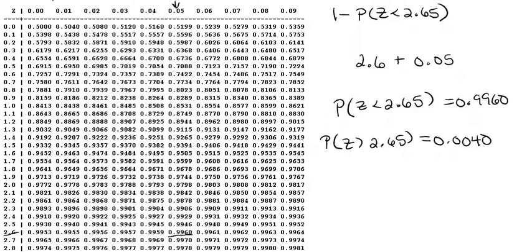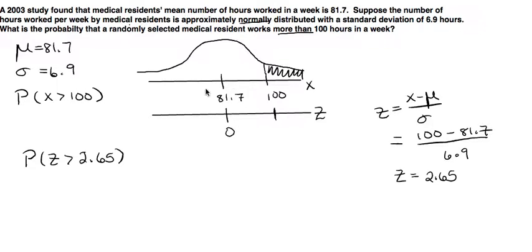Let's go back to see what that means here on our original problem. The probability then that the medical resident works more than 100 hours is 0.0040. This is our final answer.